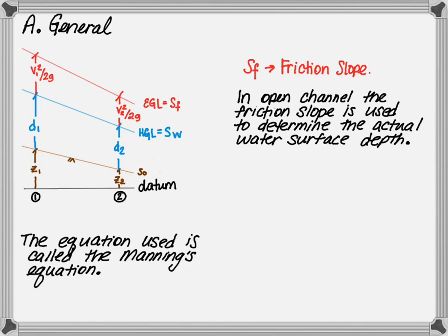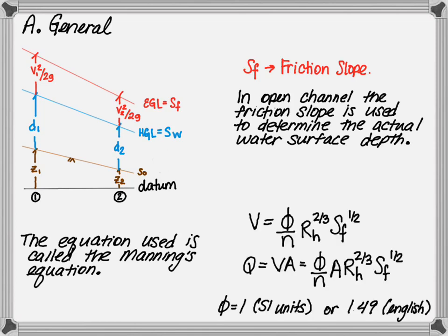To determine the depth of flow, one will use the Manning's equation. The Manning's equation states that velocity is equal to phi divided by roughness times hydraulic radius to the two-thirds power.